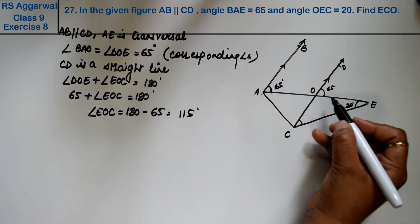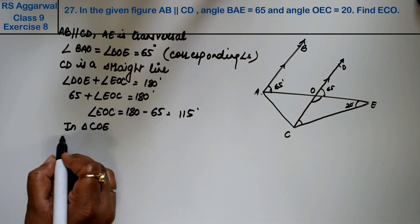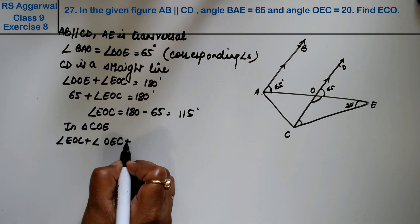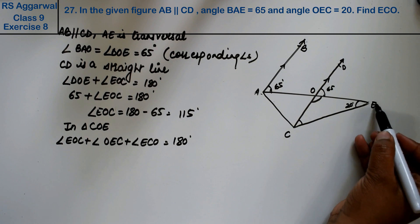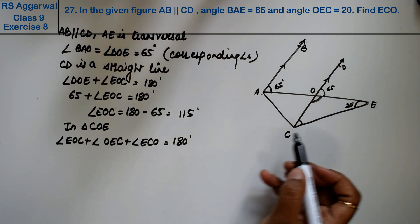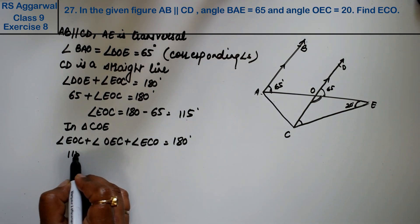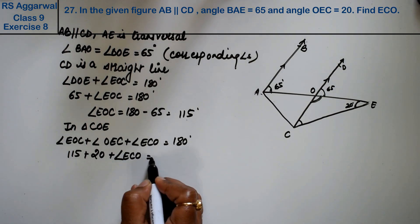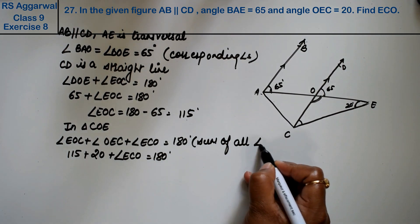Now in triangle CEO, angle EOC plus angle OEC plus angle ECO equals 180 degrees. EOC is this angle, plus OEC is this angle, plus ECO is this angle which we need to find. Why? Because sum of all angles in a triangle is 180 degrees.